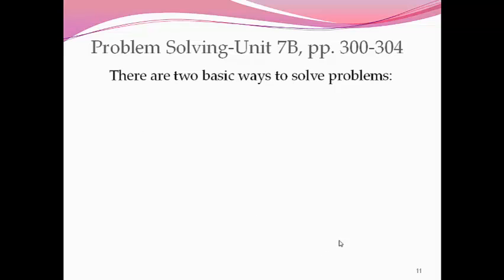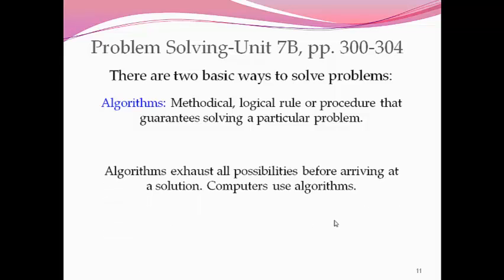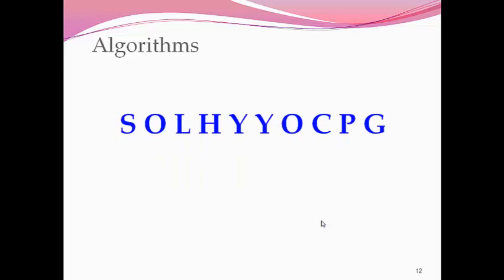There are really two basic ways to solve problems. One of those ways is using algorithms. Algorithms are methodical and logical rules or procedures that guarantee we'll solve a particular problem. Algorithms exhaust all possible solutions before arriving at a decision. Computers use algorithms. Humans rarely use algorithms because they're tedious. Although they guarantee a solution, they tend to be fairly slow.